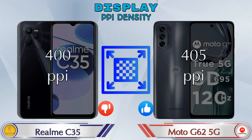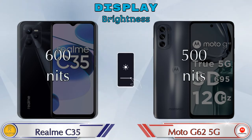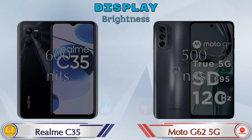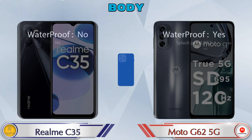If we talk about PPI density, the Realme Narzo 35 has 400 pixels per inch and the Moto G62 5G has 405 pixels per inch. Talking about brightness, the Realme Narzo 35 has 600 nits and the Moto G62 5G has 500 nits. Now let's see the complete details about the body of both phones.